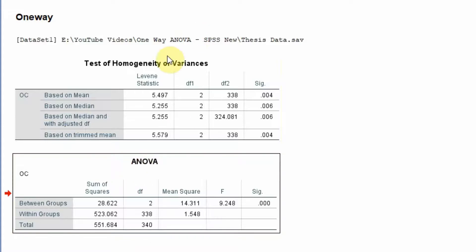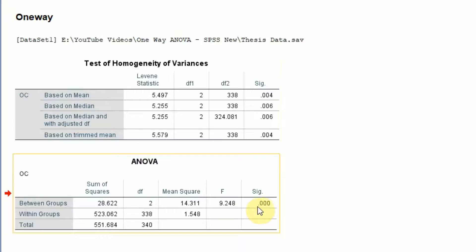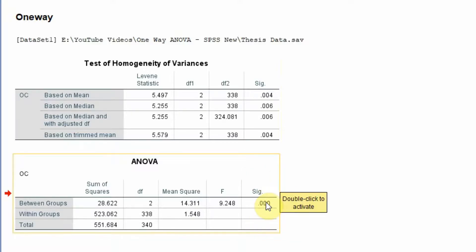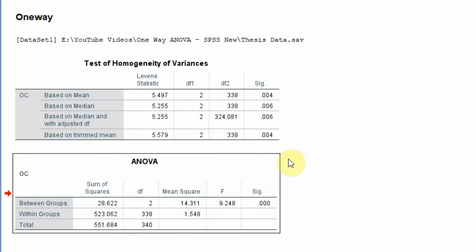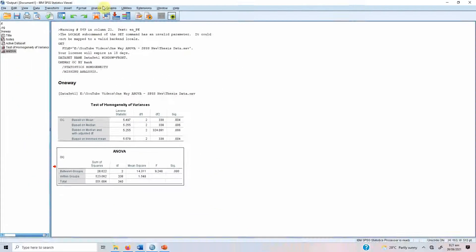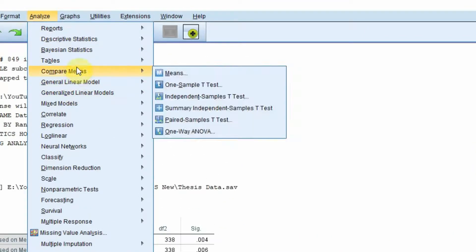Looking at the ANOVA table, there are significant differences between the groups. We can say that there are differences in organizational commitment across the different management levels, so our alternate hypothesis is supported — we reject the null hypothesis that assumed there are no differences.